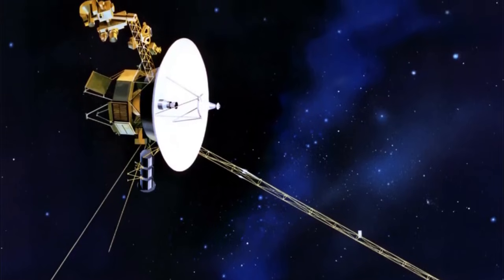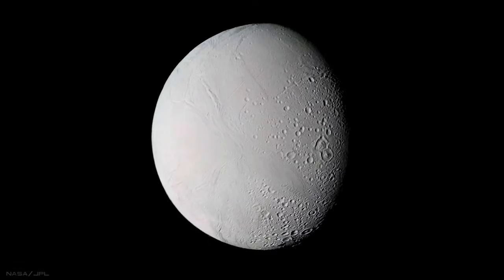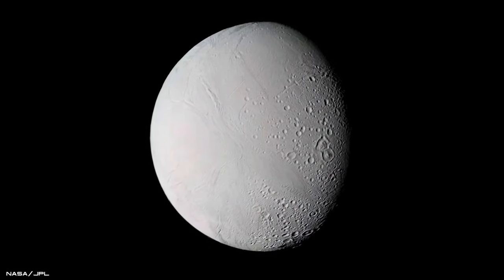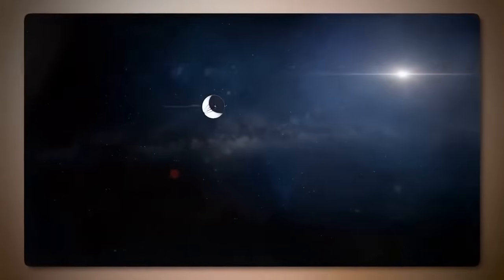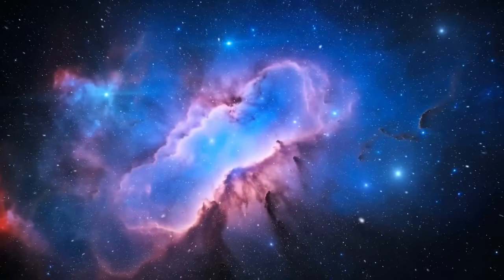To understand Voyager 2's groundbreaking findings, it's essential to first grasp the Sun's dynamic nature. Far from being a tranquil ball of light, the Sun is a star.